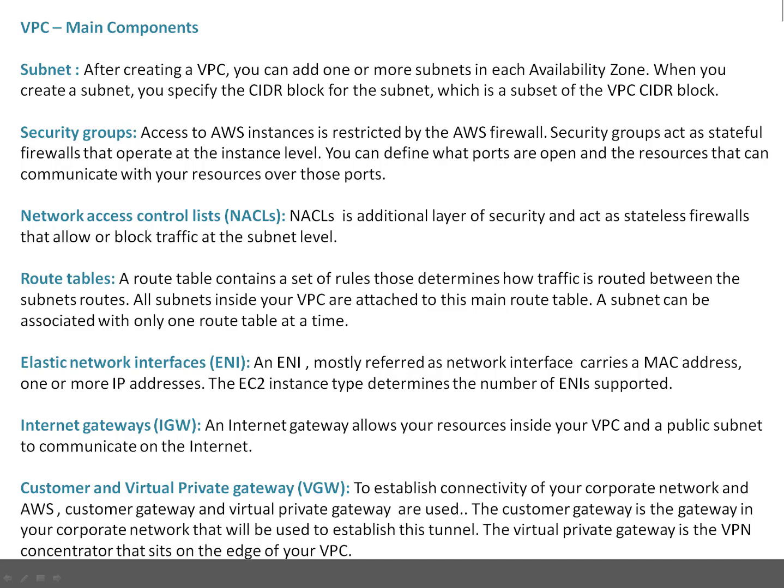Customer gateway and Virtual Private Gateway, or VPN gateway, are options when you want to establish a connection between your corporate network and Amazon. The customer gateway is the gateway in your corporate network, which establishes a tunnel to access the Amazon network. With the Virtual Private Gateway or VPN, the VPN concentrator sits on the edge of the VPC.